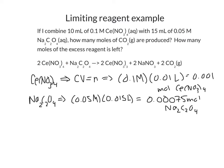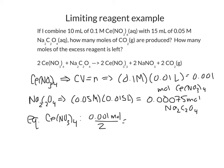What we're going to do is calculate the number of equivalents we have available for each of these reagents. The number of equivalents tells us the number of times we can do this reaction with this amount available. Every time we do this reaction we use up 2 cerium nitrates, so we divide by 2 to find the number of equivalent reactions. For the cerium nitrate: 0.001 moles divided by 2 gives us 0.0005 equivalents.